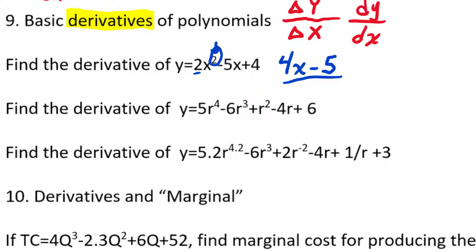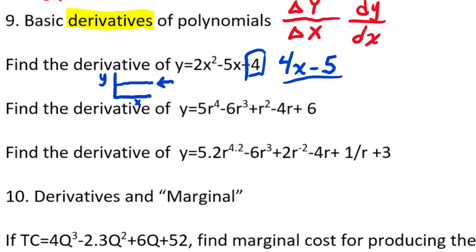The derivative of the constant 4 is just 0. Why? Think about what a graph of y = 4 looks like — y is always equal to 4, so it's a flat horizontal line, and the slope of that line is 0. That's why the derivative of a constant is 0 — the slope of that part of the function is always flat, always zero. When you know a mathematical rule, make sure you understand why it works.